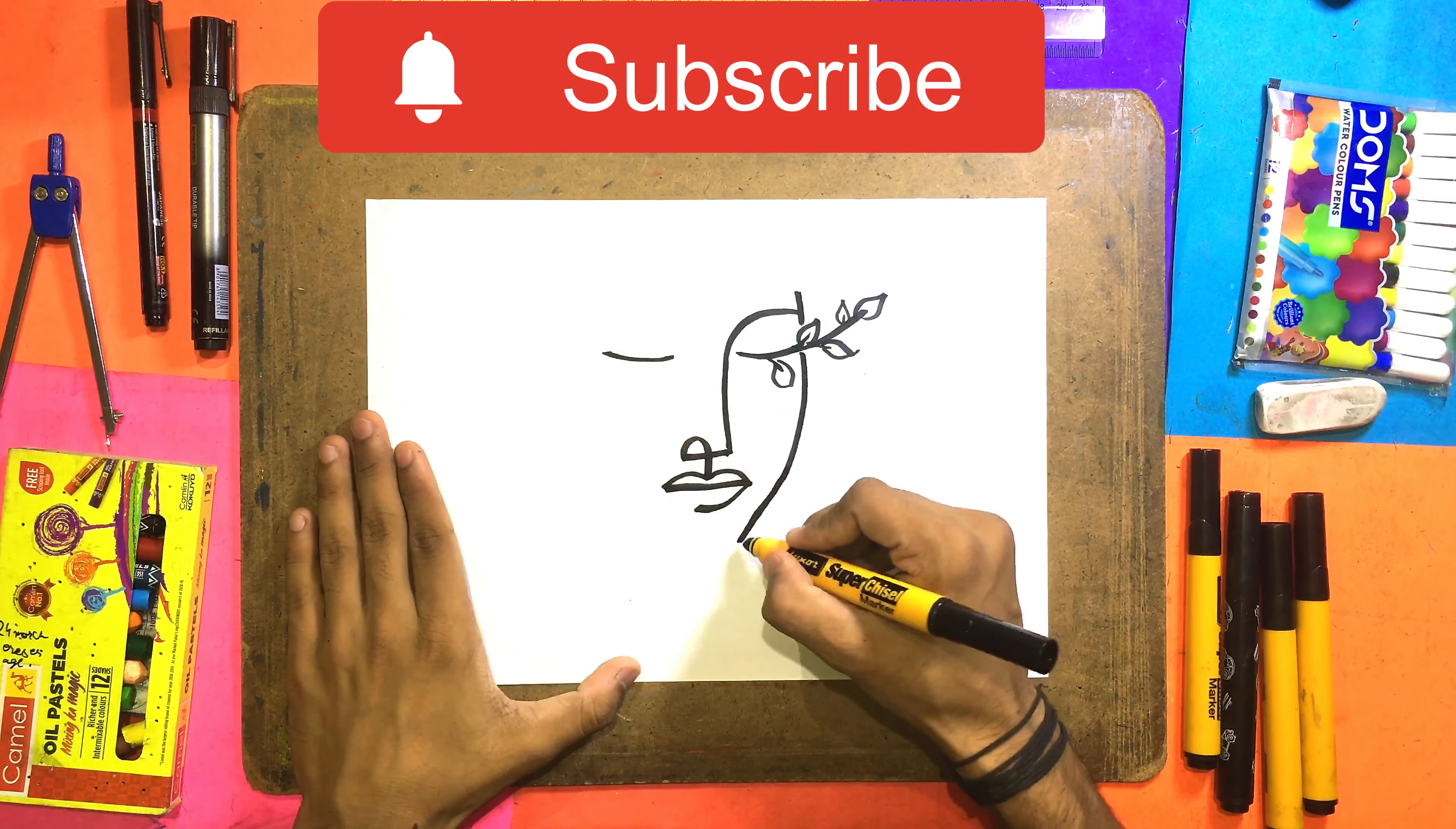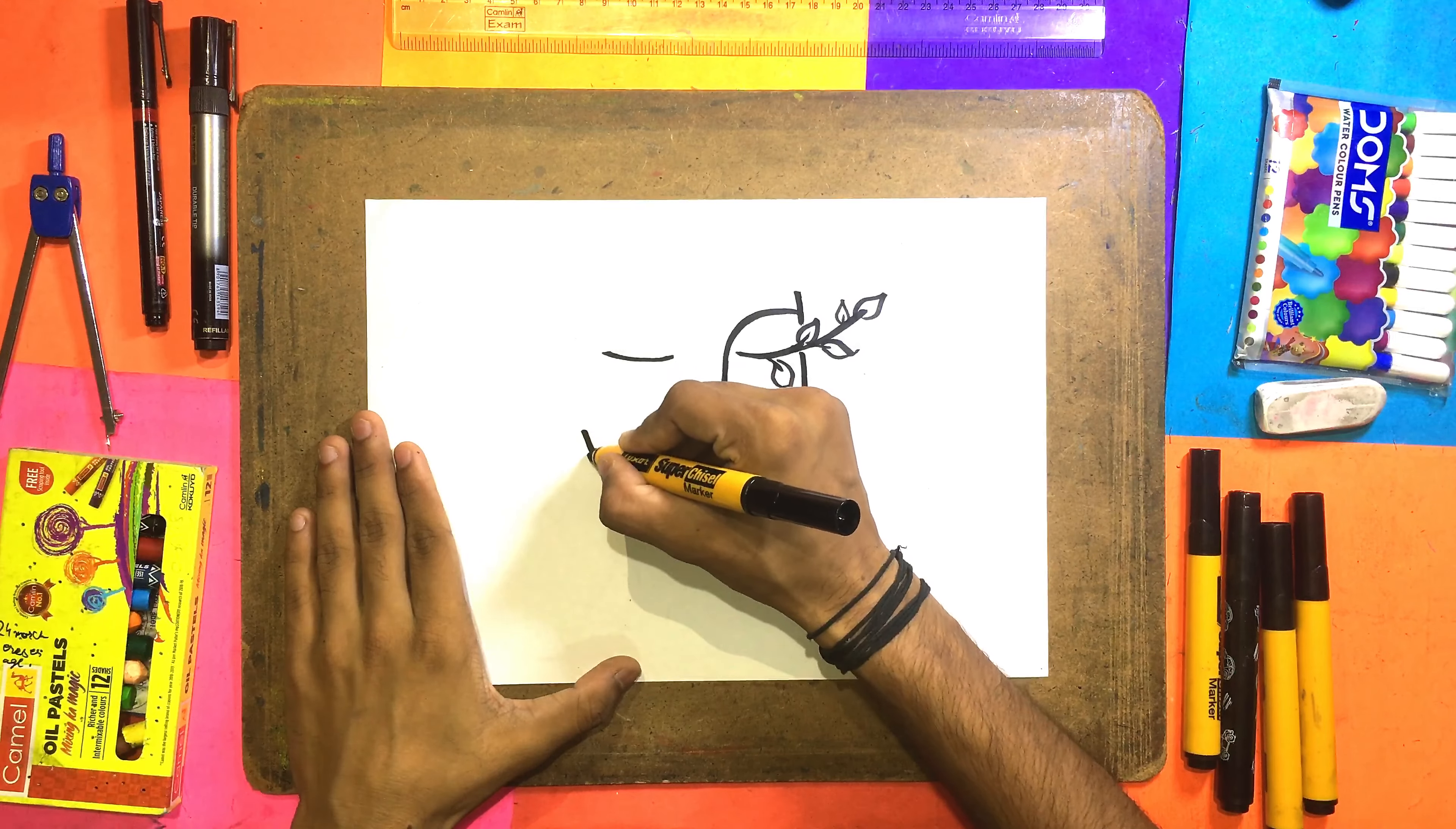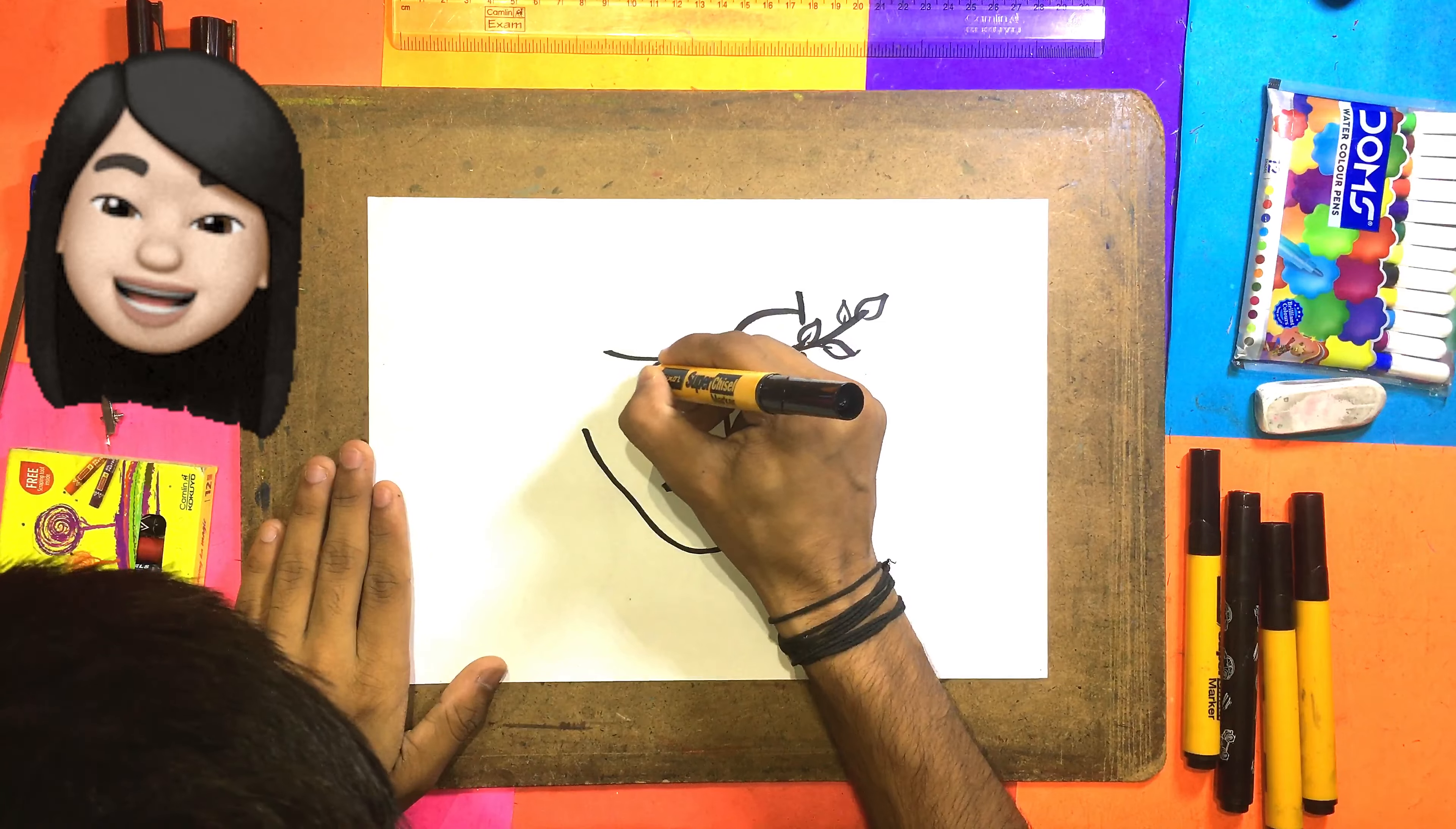It's very easy. Now we will take this line. Here we go. Now we will make this line. We will make a leaf below.